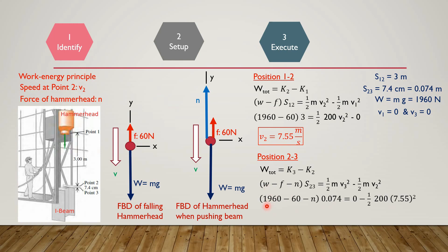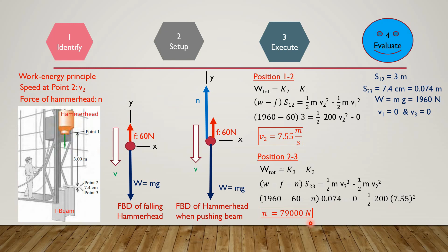Substituting values: W = 1960 Newtons, frictional force = 60 Newtons, S23 = 0.074 m. Since V3 = 0, the K3 term becomes 0. Subtracting ½MV2² and substituting the mass and V2 = 7.55 m/s, the only unknown in the equation is the normal reaction N. After simplification, the value of N equals 79,000 Newtons.